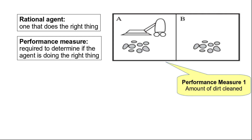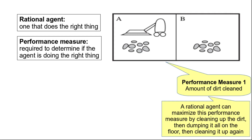However, this may not be a correct performance measure, because if this is the performance measure, what the agent would do is clean the room in time step 1 to clean all the dirt, and in time step 2 it will again throw back all the dirt, and then in time step 3 it will again clean the same dirt. It will keep repeating that sequence — cleaning the room then making the room dirty — because that is the way it can maximize this performance measure of amount of dirt that is cleaned.